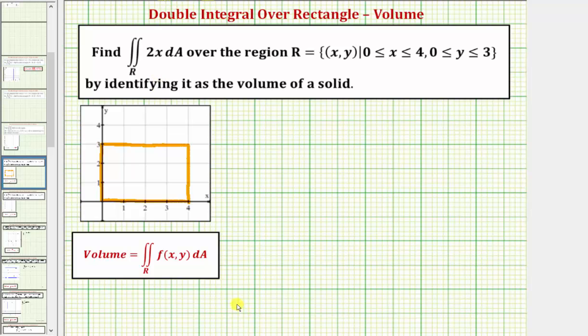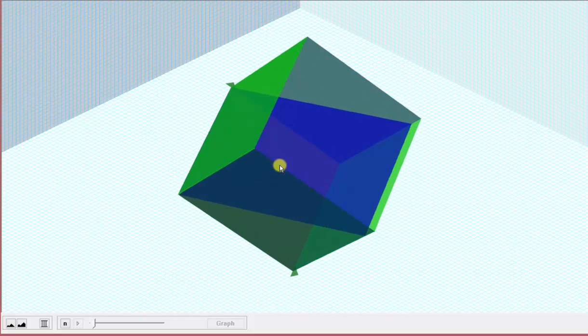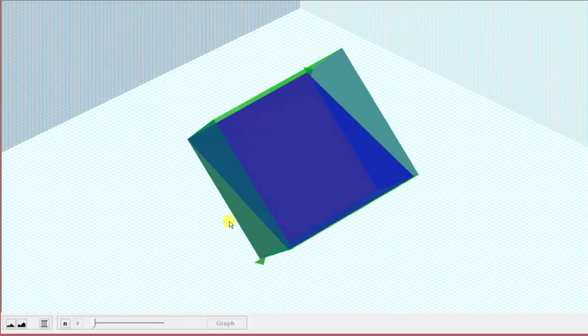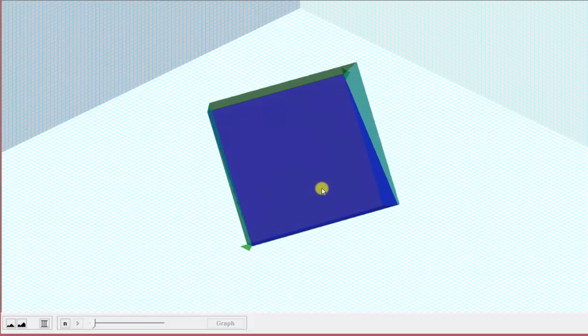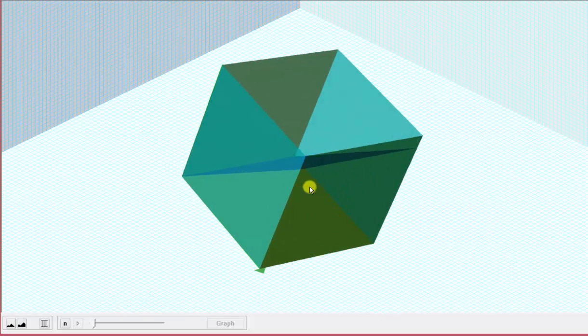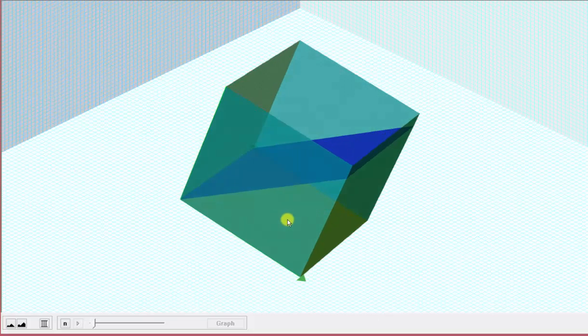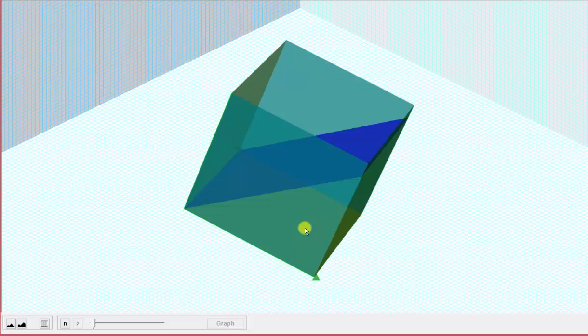Let's take a look at this graphically. f of x comma y equals two x is graphed here in blue. If we look down on the xy plane, this is the region of integration. So our double integral gives us the volume under this blue plane above the xy plane over this region. Notice how this solid would be a right triangular prism.